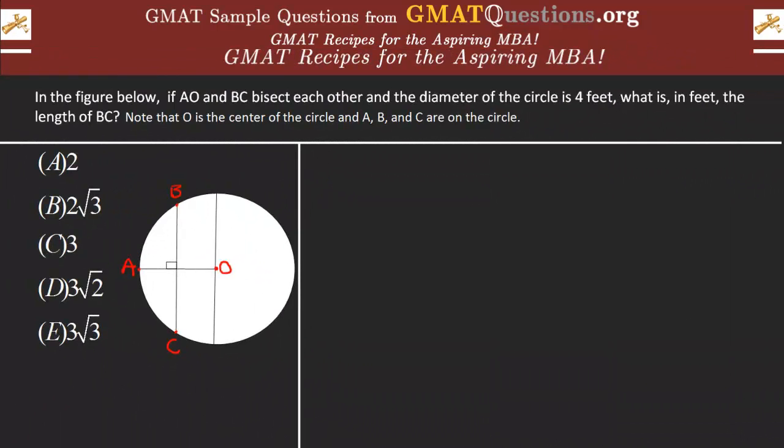Hello, this is Dakarazoo and we have a geometry question dealing with the circle. We're gonna read the question: In the figure below, if AO and BC bisect each other and the diameter of the circle is 4 feet, what is in feet the length of BC?